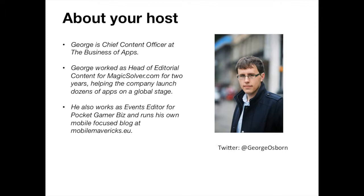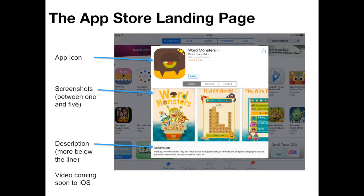The first thing we're going to look at is why app store descriptions matter. You need to think about how they look on the screen and what part they play when the user finds and lands on an app store page. As you can see here on the iPad, looking up Word Monsters by Rovia Stars, the app icon and screenshots are incredibly prominent, but the description is somewhat hidden — there's more below the fold you can read, but essentially you have this one line that really acts to help sell the app.